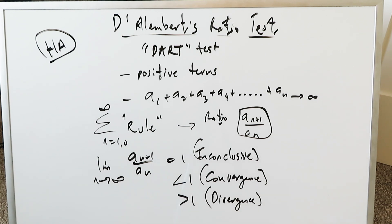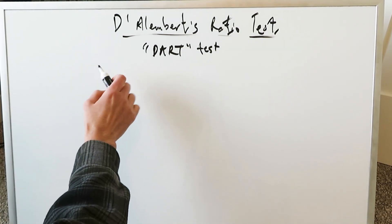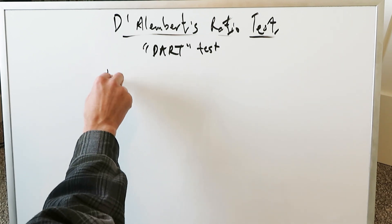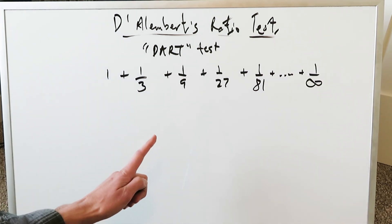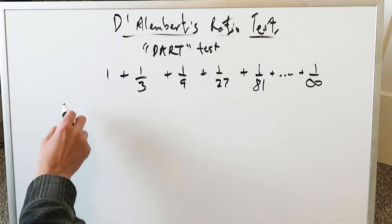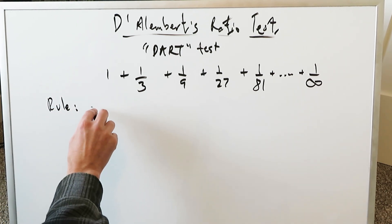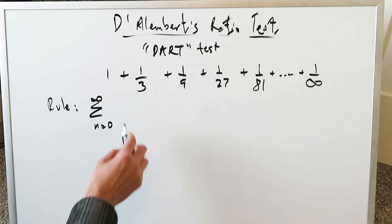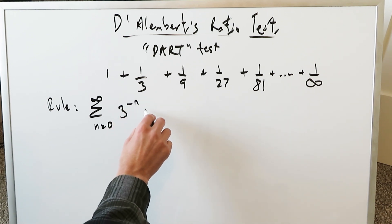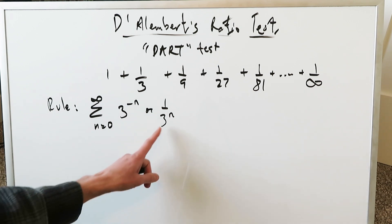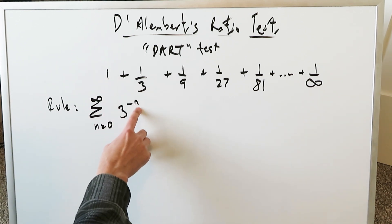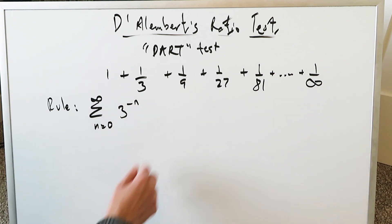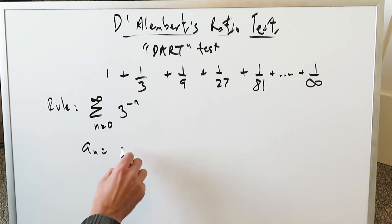The best way to show this is by means of examples demonstrating both convergence and divergence. We are looking at an infinite geometric series. You've seen something like this before. To determine convergence or divergence, you first have to establish the rule. The rule over here: any value with regards to N, from 0 to infinity, is 3 to the power of minus N — or equivalently 1 over 3 to the power of N. So my Nth term is always 3 to the minus N.